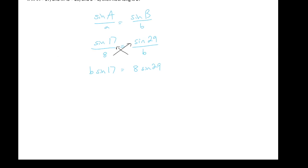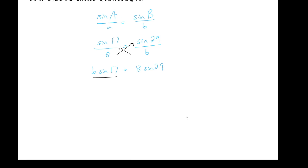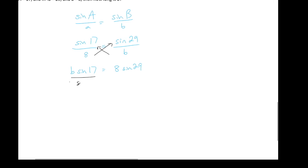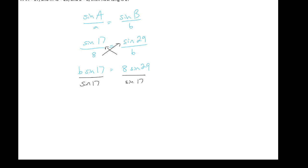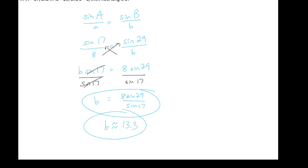Now I need to solve for b by itself, so I'm going to divide both sides by the sine of 17. This leaves us with b equals 8 times the sine of 29 divided by the sine of 17 — that is our exact answer. Of course that's a strange answer for a tape measure, so we punch it into our calculator: 8 times sine of 29 divided by sine of 17 gives approximately 13.3. Go ahead and pause the video to verify this. Both the exact answer and the approximation will be required on your next exam.